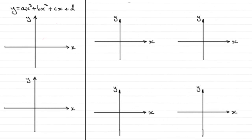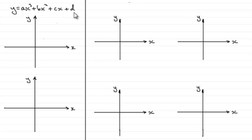Welcome to this video where I'm going to run through some basic graphs that you ought to be familiar with. We start with cubic graphs. They've got the form y equals ax cubed plus bx squared plus cx plus d, where a, b, c, and d are constants.